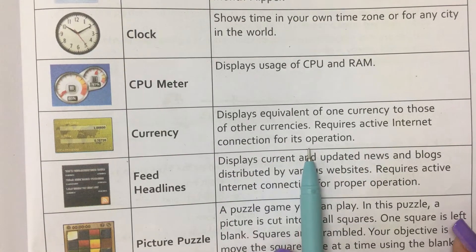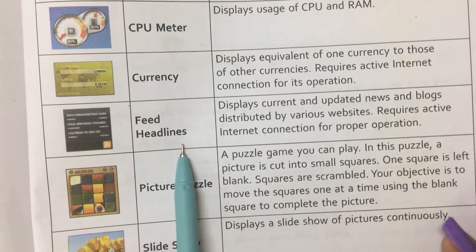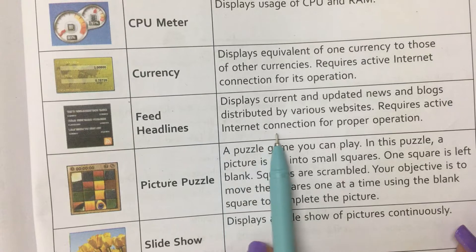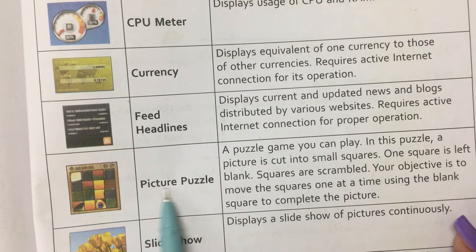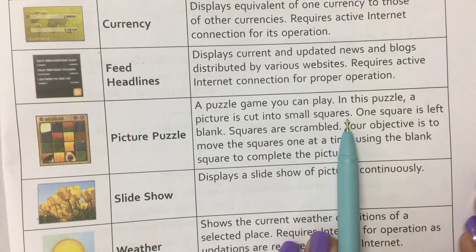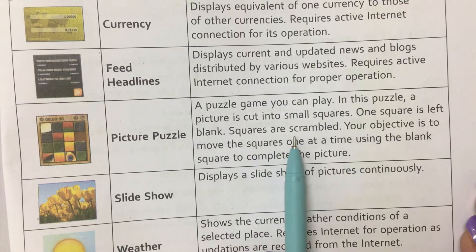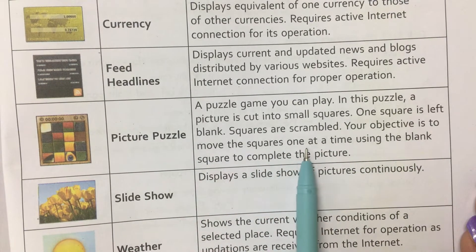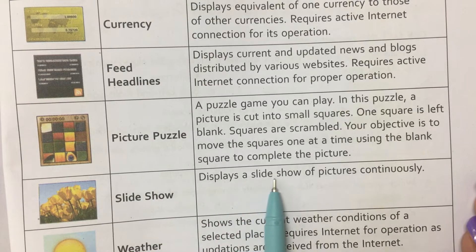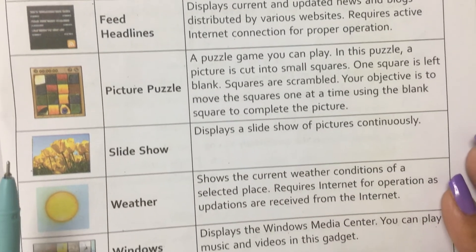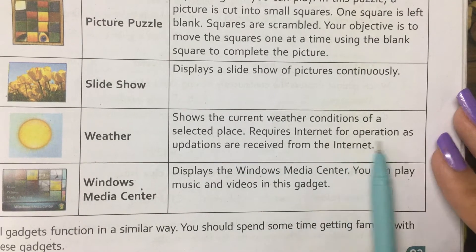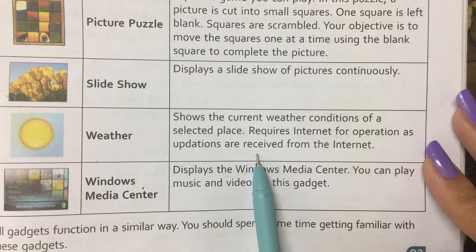Currency requires an active internet connection for operation. Feed Headlines — displays current and updated news and blogs distributed by various websites; requires an active internet connection. Picture Puzzle — a puzzle game where a picture is cut into small squares, one square is left blank, squares are scrambled, and your objective is to move the squares one at a time using the blank square to complete the picture. Slide Show — displays a slide show of pictures continuously. Weather — shows the current weather conditions of a selected place; requires internet for updates.